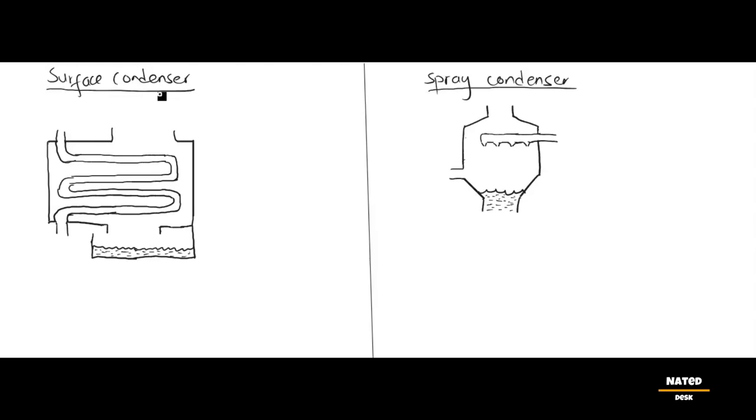Okay. We have two types of condenser that we will talk about here. Now let's look at how each operate and how the formulas differ.